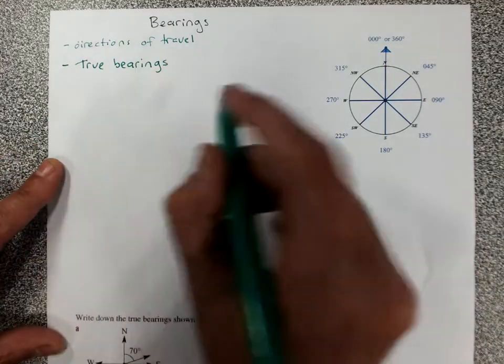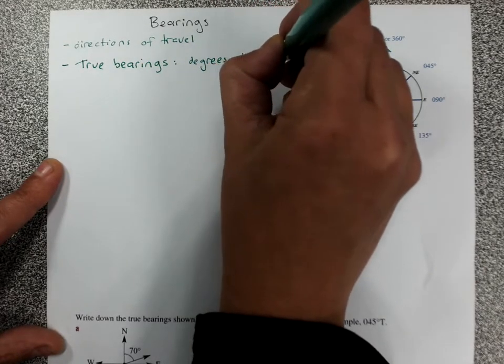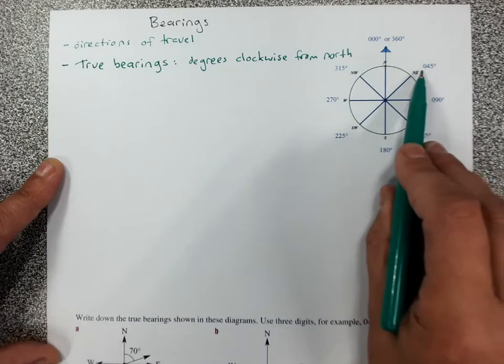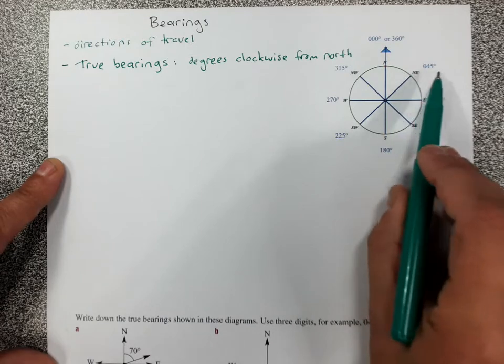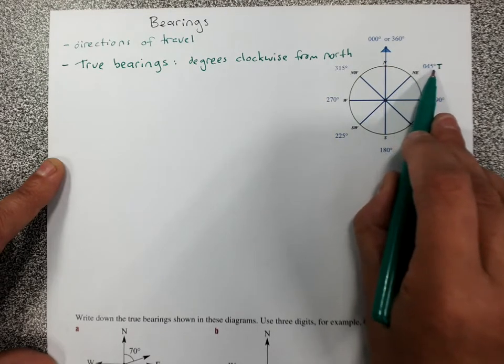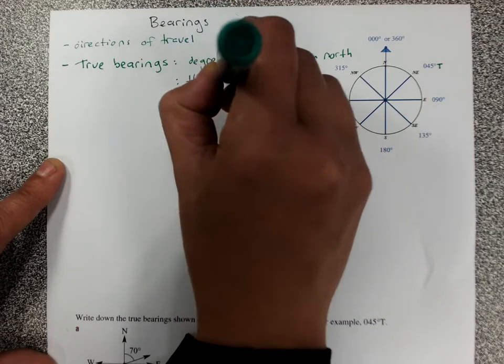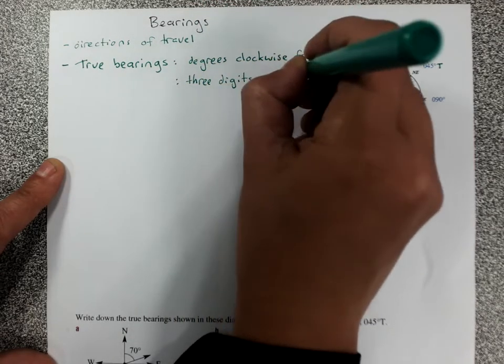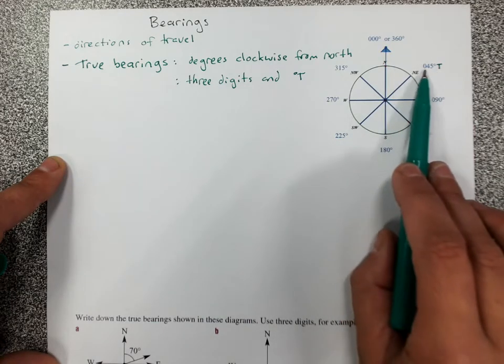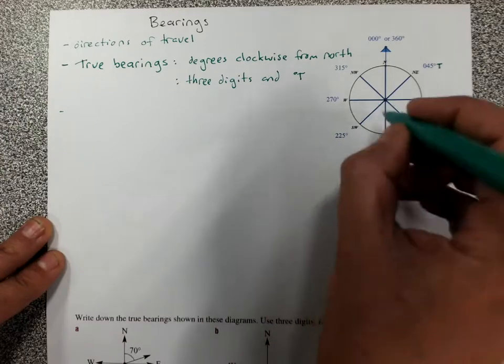So true bearings are given as degrees clockwise from north. And you can see that northeast could also be given as 045 degrees, and for a true bearing would write T at the end. True bearings are given three digits, so if we're missing a number at the front for 45 degrees, we make it 045 and then degrees T for true. So we could talk about going northeast or we could talk about traveling on a bearing of 045 degrees true. So we remember of course each quarter of the compass is 90 degrees.